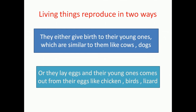Basically, living things reproduce mainly in two ways. They either give birth to their young ones which are similar to them — like cows and dogs — or they lay eggs and their young ones come out from the eggs, like chickens, birds, and lizards.